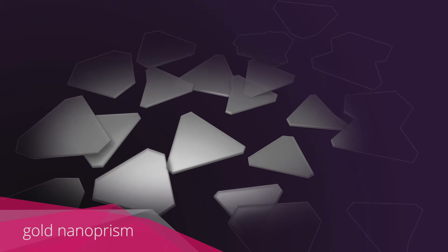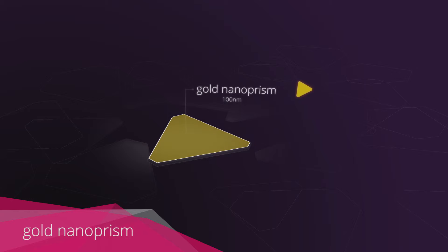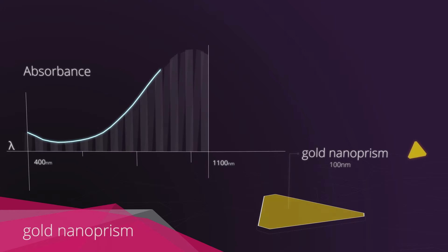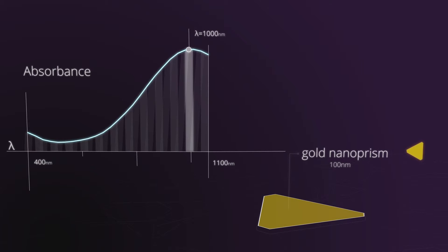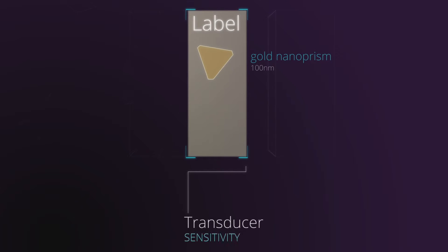They, at the right dimensions, show interesting properties when exposed to a source of energy in a given frequency. They convert almost 100% of light energy into heat. Biosensors can increase their sensitivity when using these gold nanoprisms as a label.